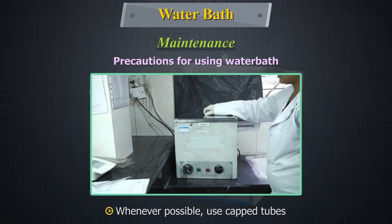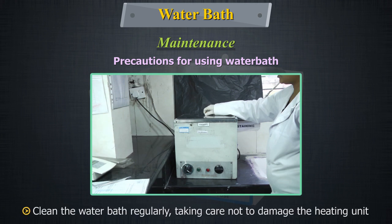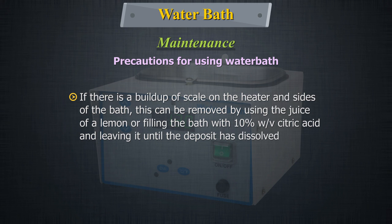Wherever possible, use capped tubes. Clean the water bath regularly, taking care not to damage the heating unit. If there is a build-up of scale on the heater and sides of the bath, this can be removed by using juice of a lemon or filling the bath with 10% citric acid and leaving it till the deposit has dissolved.